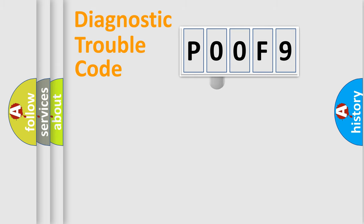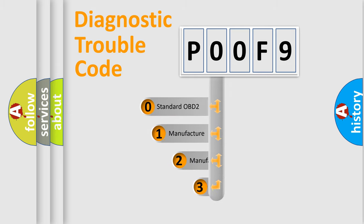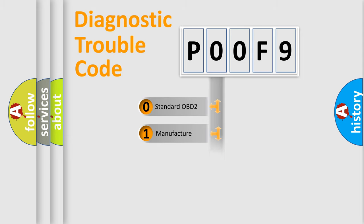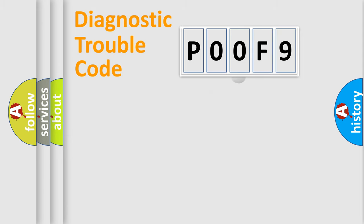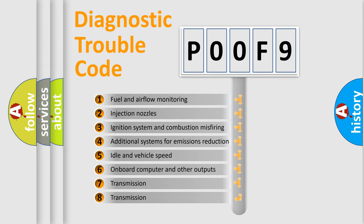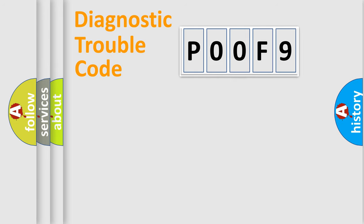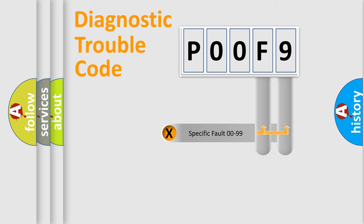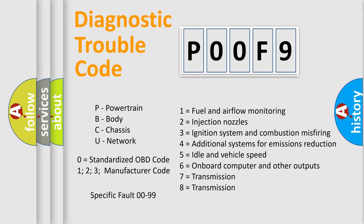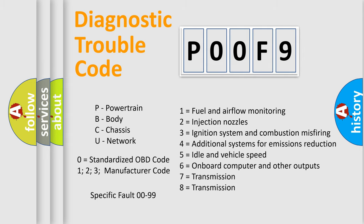This distribution is defined in the first character of the code. If the second character is expressed as zero, it is a standardized error. In the case of numbers 1, 2, or 3, it is a manufacturer-specific error. The third character specifies a subset of errors. This distribution is valid only for the standardized DTC code. Only the last two characters define the specific fault of the group.